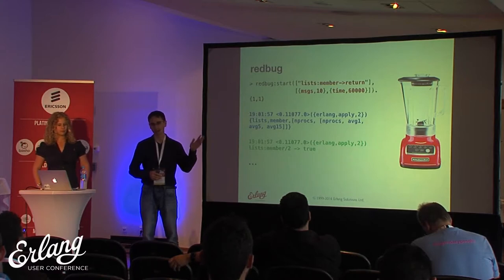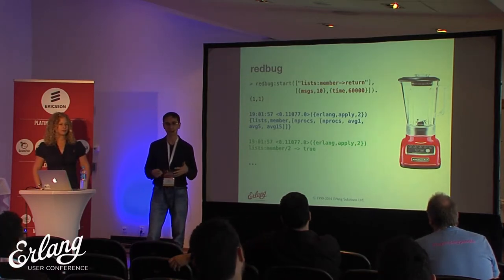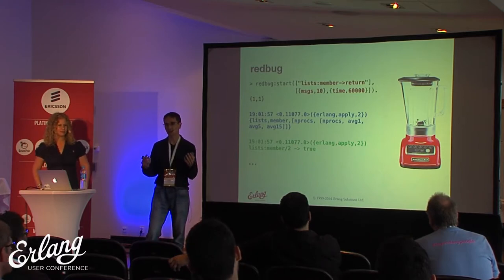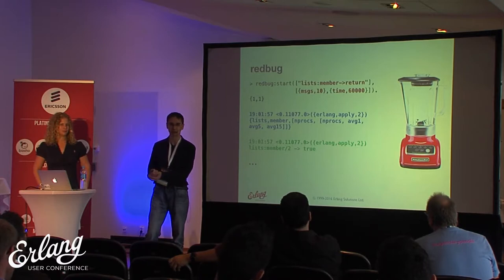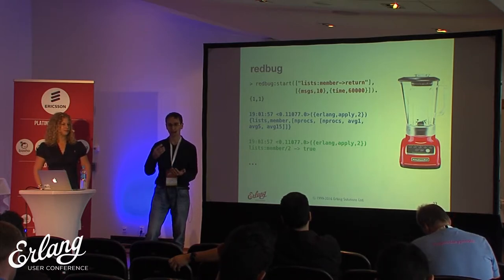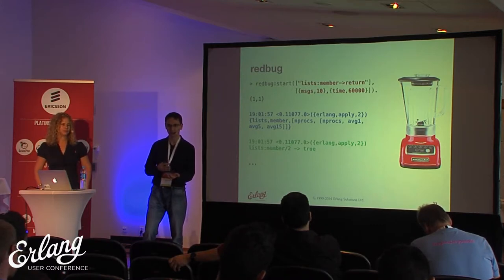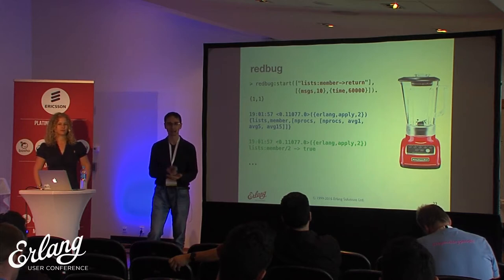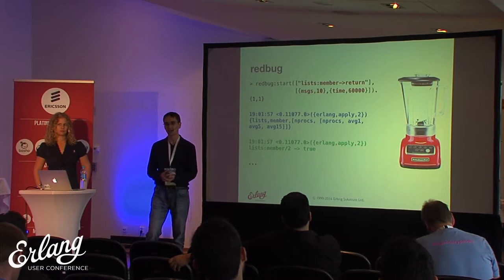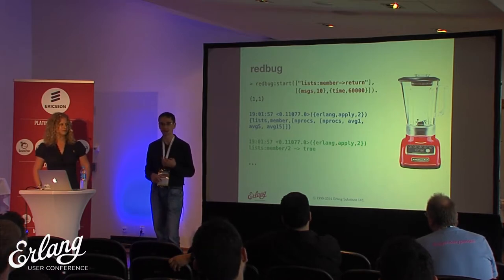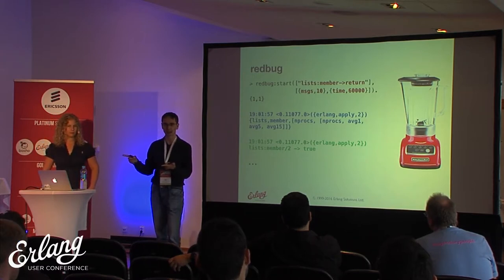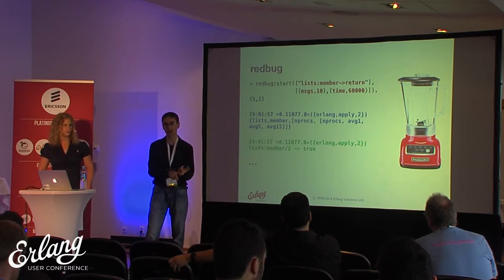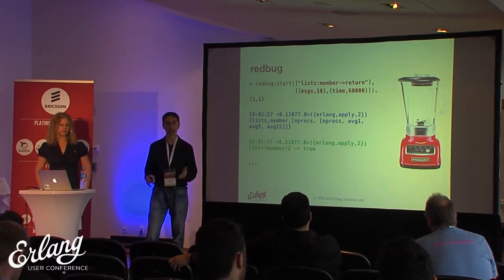Another very useful tool is Redbug. It's different from the ones I've been talking about — Redbug is like a blender. It takes Erlang tracing, which is very dangerous, and tries to make it as safe as possible. Erlang tracing is dangerous because a function can be called many times, and if it's called very often with huge arguments you can overload the system very easily. With Redbug you can specify, for example, that you're interested in calls to the lists:member function, but if you collect ten messages or one minute elapses, then you stop the collection and tracing — whichever happens first.